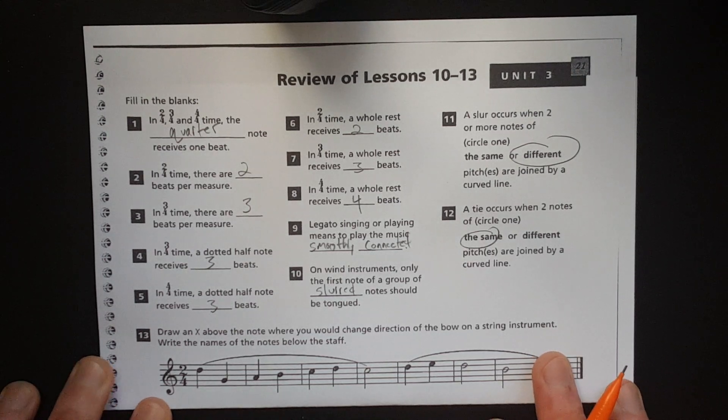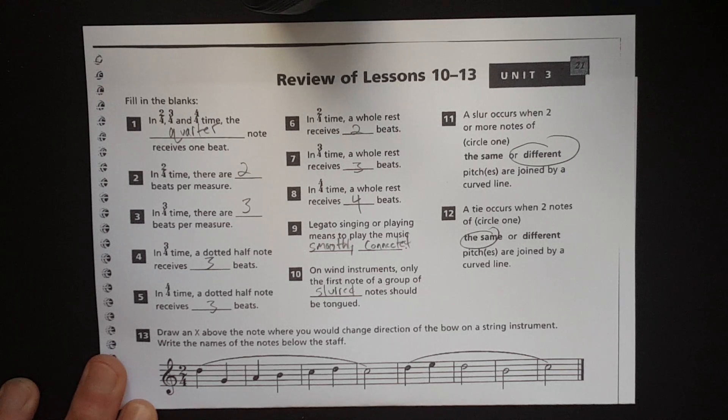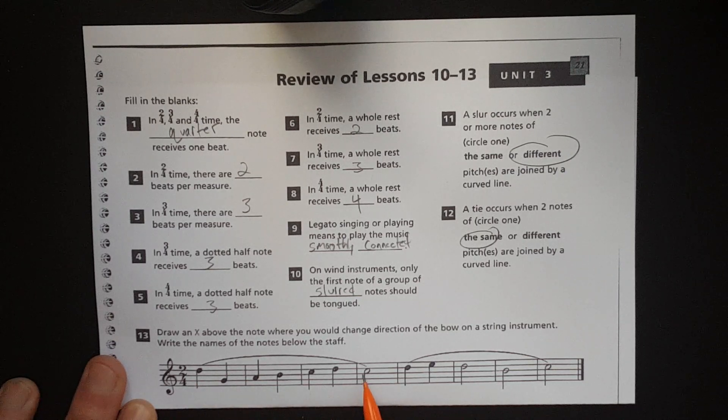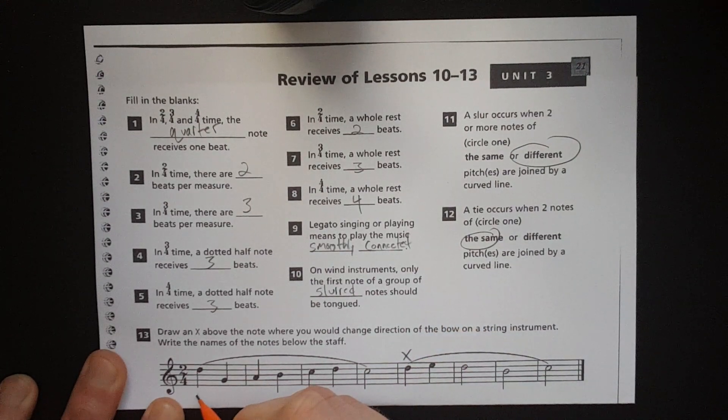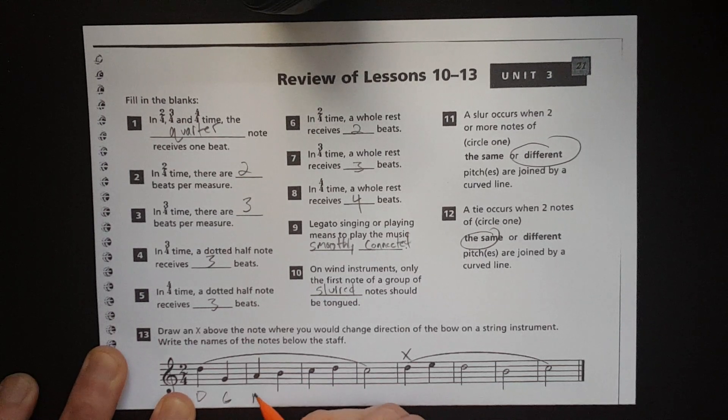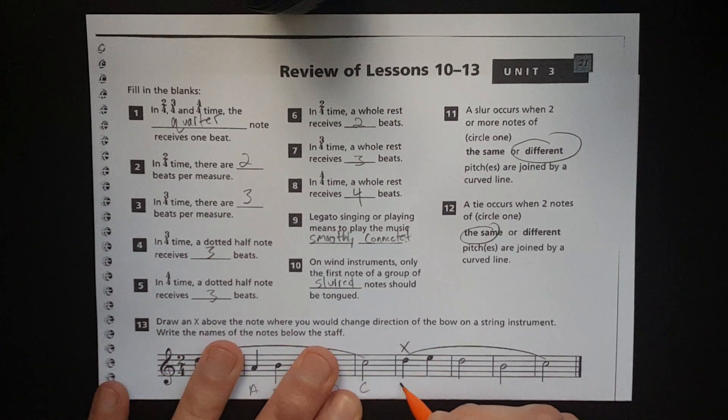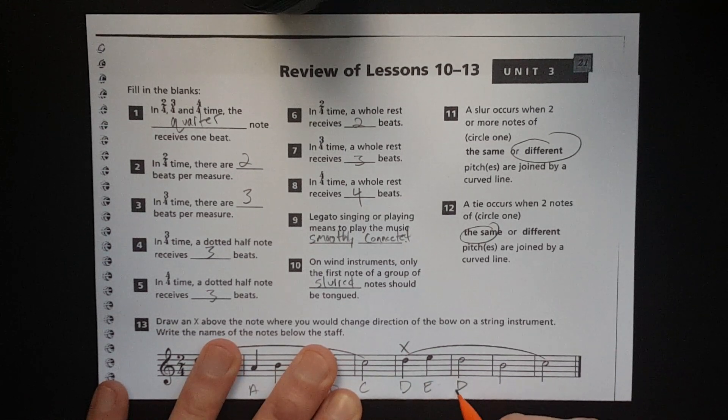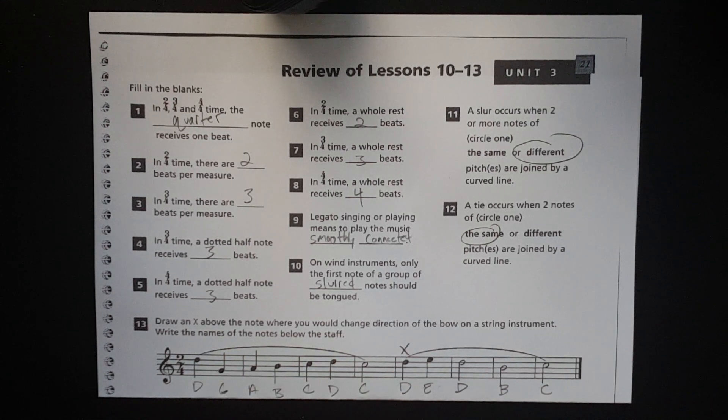Alright. More exercises. Number 13. Draw an X above the note where you would change direction of the bow on a string instrument. Write the names of the notes below the staff. So, right, since this is all slurred, that indicates one bowing direction. Or, if you were a trumpet player, that would be one breath. So, that's the change of direction or a new breath. And let's go ahead and just throw those notes under there. D, G, A, B, C, D, C, D, E, D, B, and C. Remember, every good boy does fine for lines. F, A, C, E for spaces. I say that all the time in these first few units just because people seem to forget that.